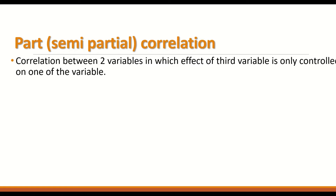If the third variable's effect is removed from both variables, then it is partial correlation. In semi-partial correlation, the effect of the third variable is held constant on only one of the variables.